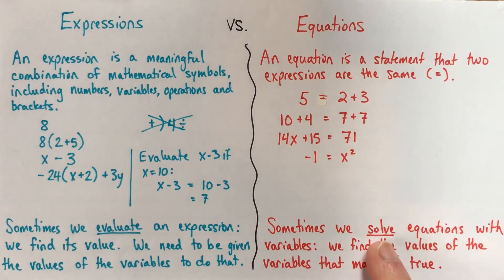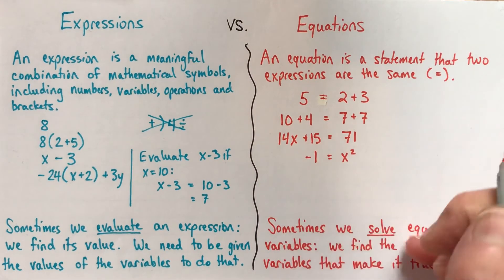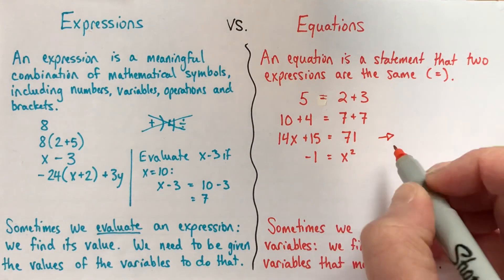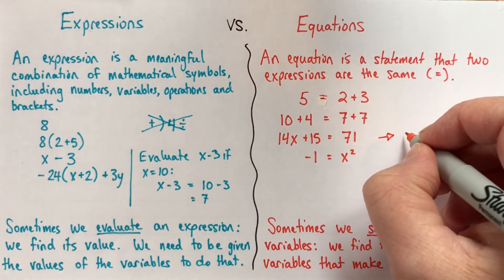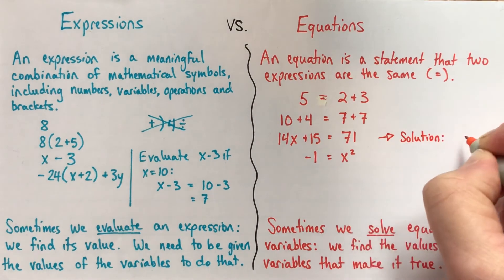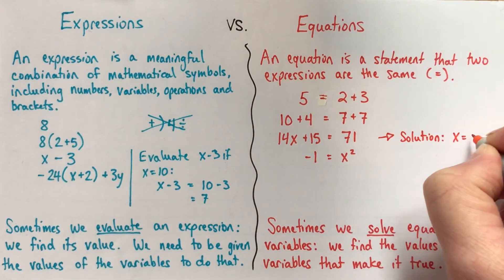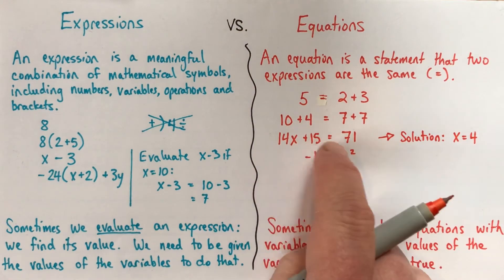Sometimes what we want to do is solve equations, if the equations have variables. So what we do when we're solving an equation is we're finding the values of the variables that make the equation true, so that make the two sides equal to each other. So an example here, I'm not going to show you how, if you were showing someone this, you'd want to write out all your work to justify it, but here the solution, there's only one solution to this equation, and it's x equals 4. If x is equal to 4, then 14 times x plus 15 is equal to 71.